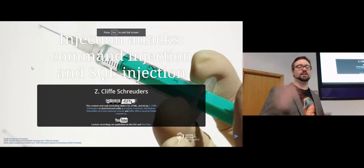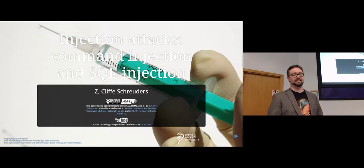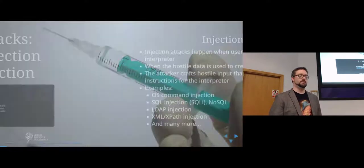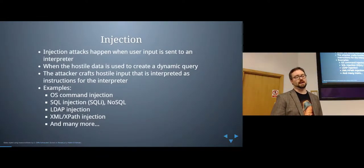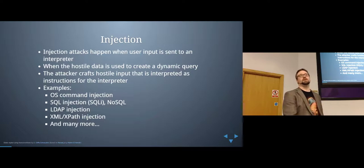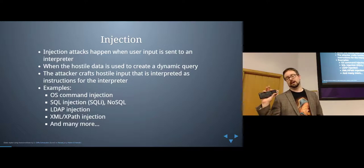We're talking about injection attacks. The two main examples are command injection and SQL injection, but there are loads of different kinds of injection attacks. Cross-site scripting is also a form of injection attack, which was covered last week. Basically, an injection attack happens when we get some input from a user and end up sending it to an interpreter — whether that's a web browser's JavaScript engine or a database engine like MySQL or PostgreSQL — as part of a query.